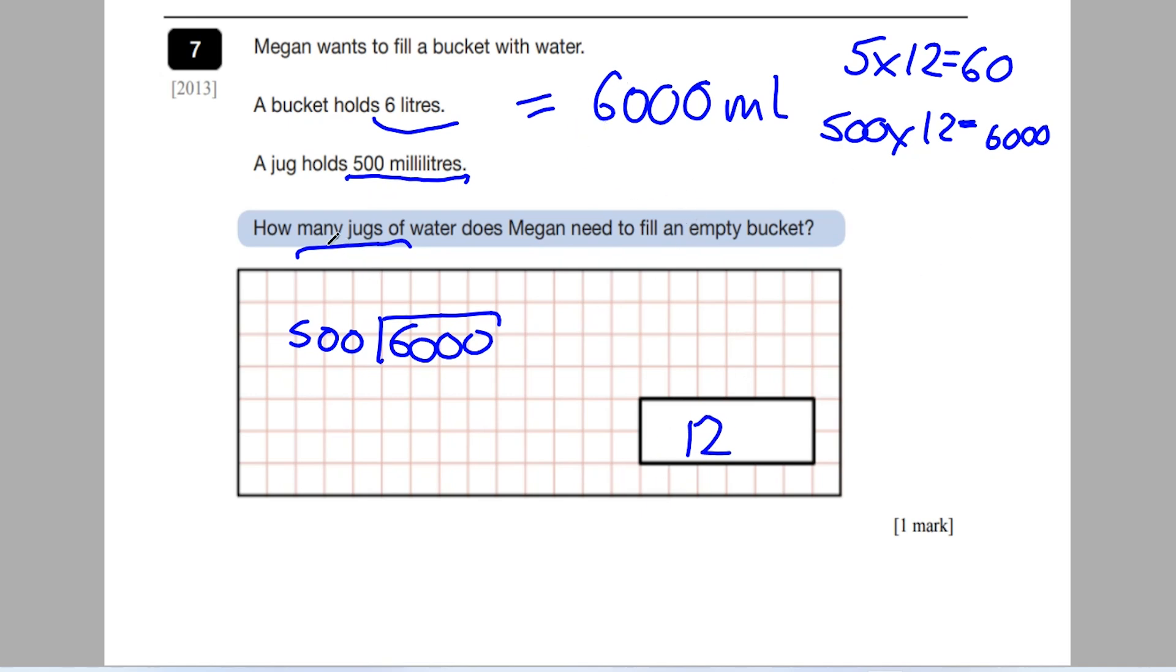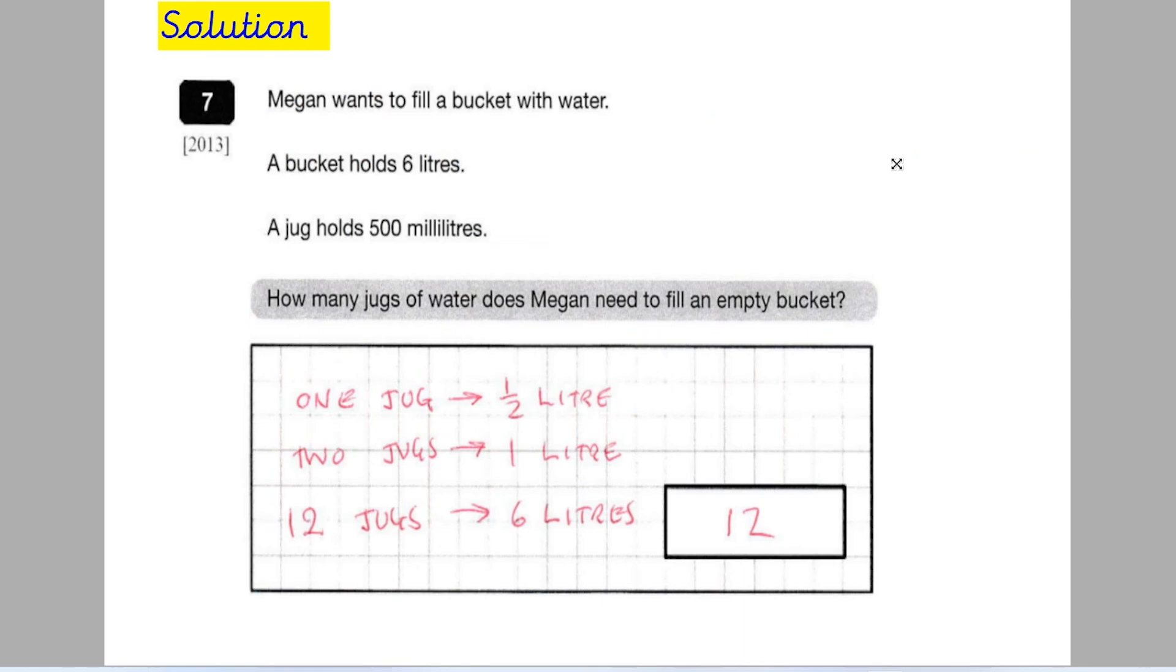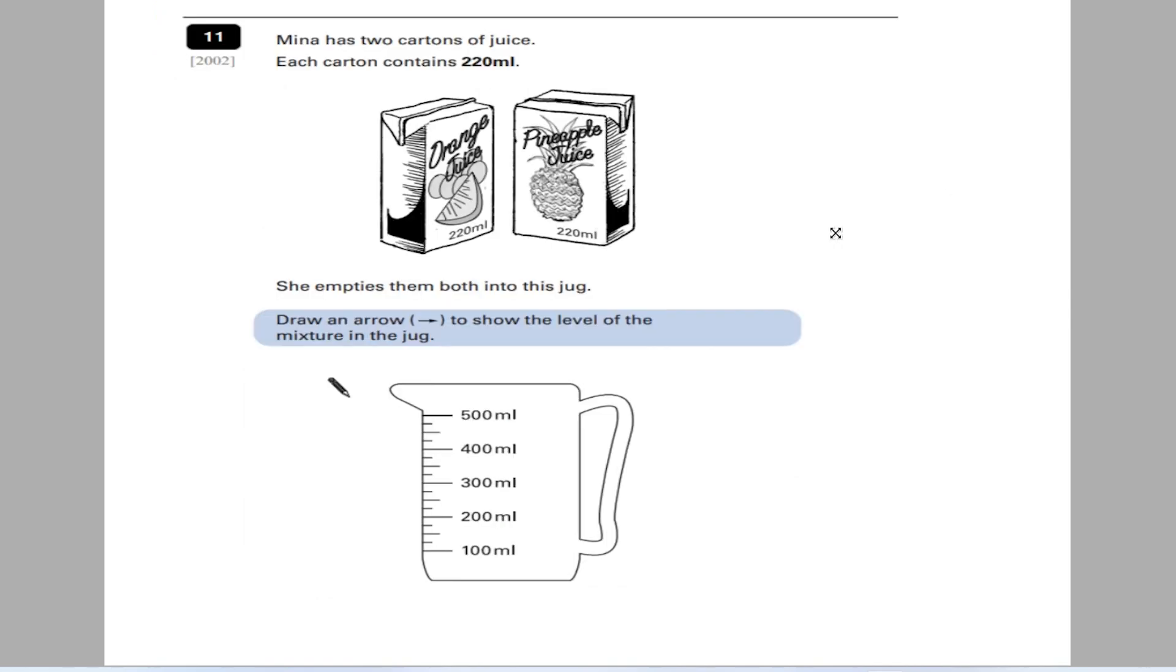How have I done it? Well, I've either done 6,000 divided by 500, which would give me 12, or use my known facts to know that 500 times 12 would give me 6,000. 6,000 is the answer because 6 litres equals 6,000. So it would take 12 of these jugs holding 500 millilitres to get to that 6,000. So even though this is a capacity question, there's other parts to it. You need to know your times tables, your known facts. You need to be able to divide and multiply. Here you can see the solution and how they've worked out. One jug is half a litre, two jugs is one litre. Therefore, 12 jugs is going to be six litres, similar to the way I worked out.